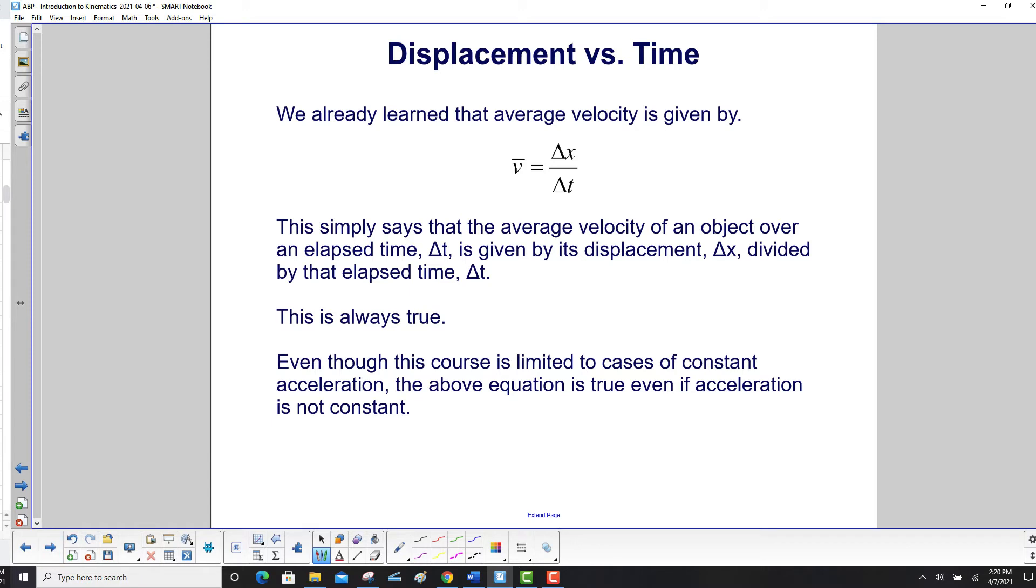This approach will depend on two different but consistent ways of determining average velocity. We've already learned that average velocity, or v̄, is given by Δx over Δt. That tells us that the average velocity of an object over an elapsed time Δt is given by its displacement Δx divided by Δt. This is always true.